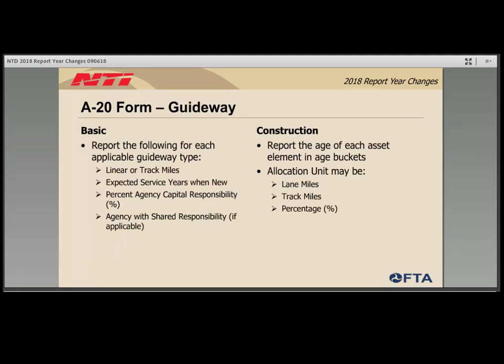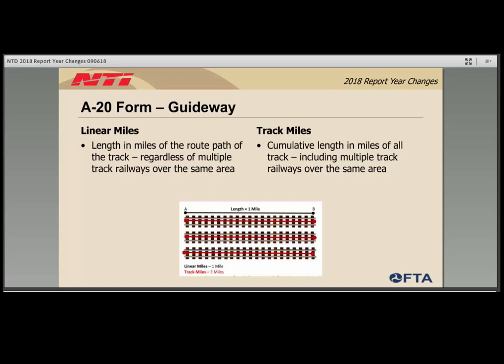In the guideway section, for basic information the agency will identify how many miles — linear track miles — they have for each applicable guideway type, how many years the track is expected to last when new, the percent capital responsibility the agency has for that track, and if applicable, the agency with whom they share capital responsibility. For the construction side, the agency groups the guideway into buckets based on the year it was built. The difference between linear and track miles is important: linear miles are the length of the route path regardless of how many railways go over that path, while track miles are the cumulative length of all track. For example, three tracks going over the same one-mile path equals one linear mile but three track miles. The agency may choose which option to use on the A20 form.